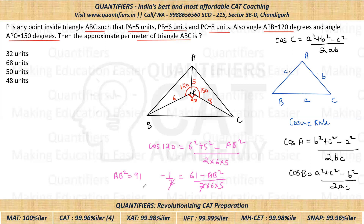I hope everyone understands up to here. We don't need an exact value; let's take an approximate. AB = √91, which is approximately 9.5. Since the options are spread apart, approximate values will give us the correct answer. So AB ≈ 9.5.